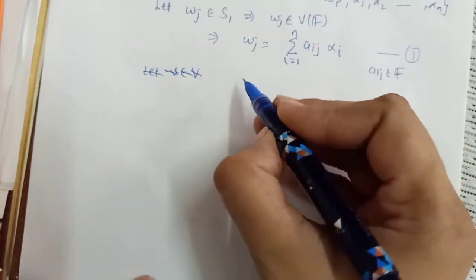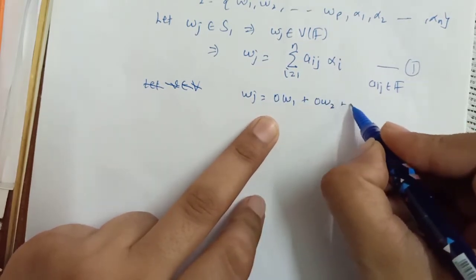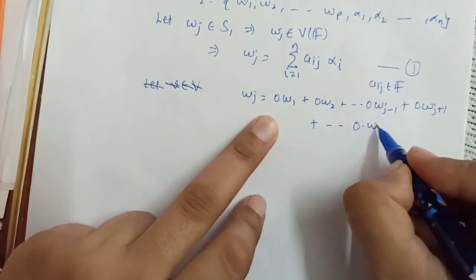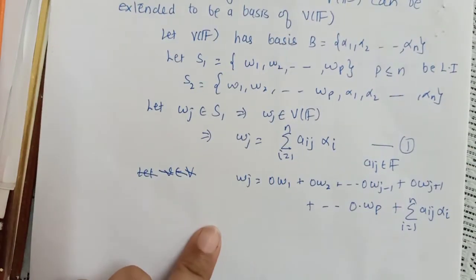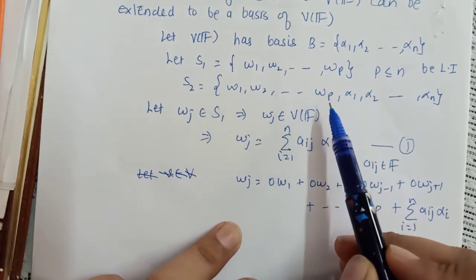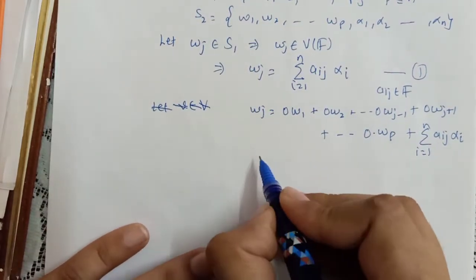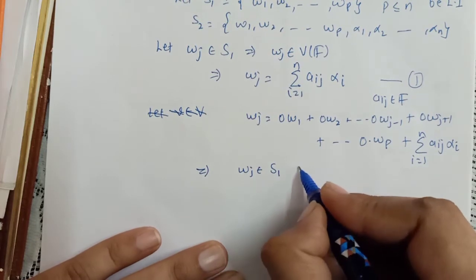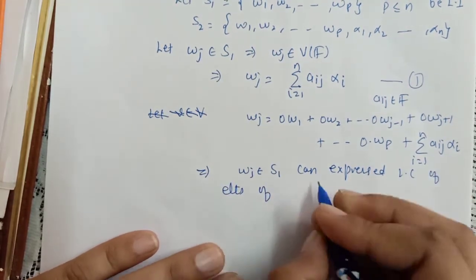We can write wⱼ as: 0·w₁ + 0·w₂ + ... + 0·wⱼ₋₁ + 0·wⱼ₊₁ + ... + 0·wₚ + Σ aᵢⱼ αᵢ. This expresses wⱼ as a linear combination of all other elements of S₂ (excluding wⱼ itself), which means some element of S₁ can be written as a linear combination of elements of S₂.